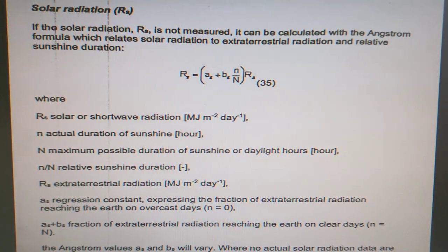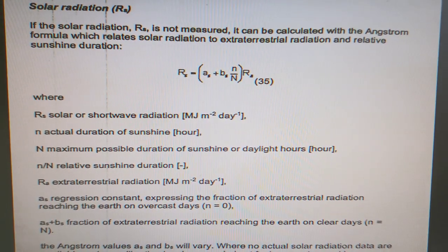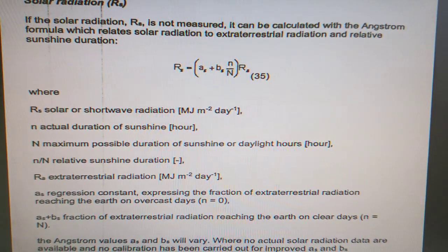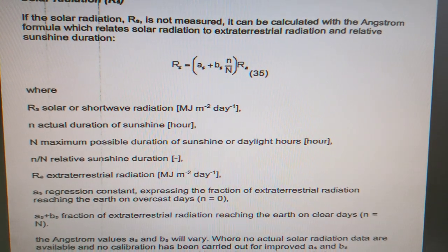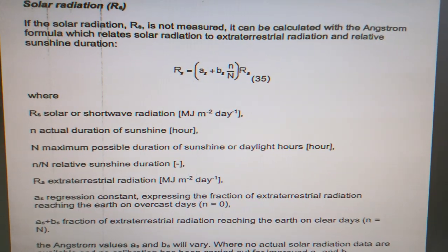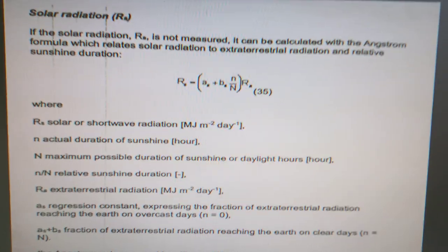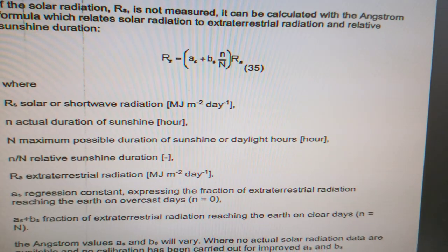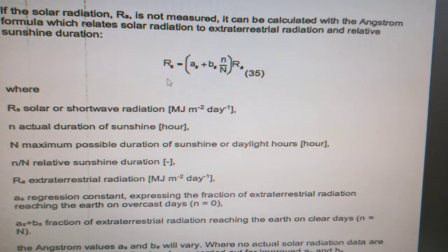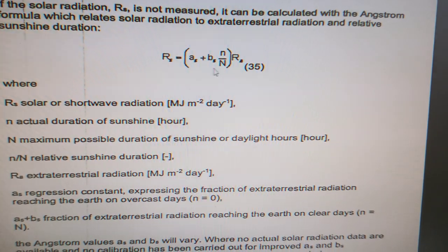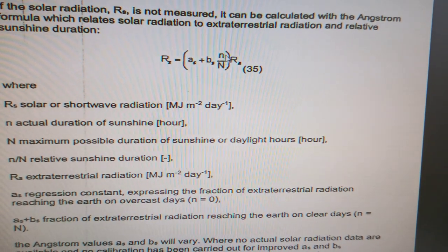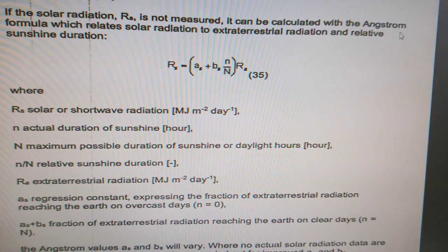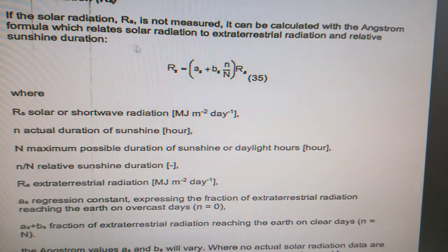The first method is the Angstrom method. Through the Angstrom method, the formula is given here, and it is based on solar radiation relative to extraterrestrial radiation and relative sunshine duration. In this formula, Rs is the solar radiation, and the expression is: Rs = (as + bs × (n/N)) × Ra. This is the Angstrom formula which relates to solar radiation.